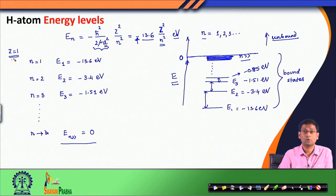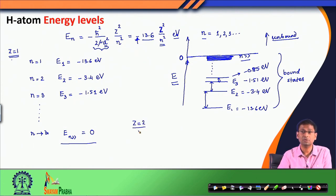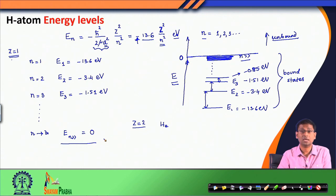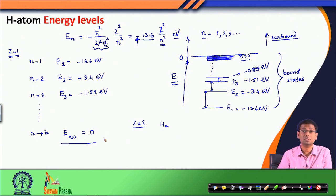All these results that we discussed for the energy levels were for Z equals 1. Suppose I consider Z equals 2 — that means nuclear charge is 2, which would be the helium atom. But helium atom has two electrons, whereas the Hamiltonian we wrote down for hydrogen atom had only one electron. So the solution we have obtained is applicable only to systems with one electron, not more than one, because with more than one electron there exists an important interaction — electron-electron repulsion — which we have not considered in our problem yet.